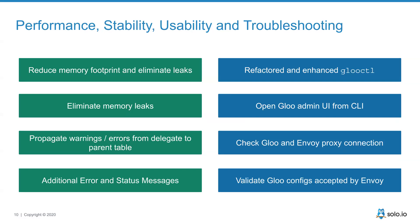Finally, there's a laundry list of small improvements around performance, stability, and usability to make the experience of working with Glue as good as possible. A big emphasis was treating it as an urgent priority — anytime we found we could report errors more clearly, detect errors with metrics or additional checks in Glue CTL, and basically moving towards fully automating health checking and monitoring of Glue, even as teams undergo operational workflows involving testing new configuration.